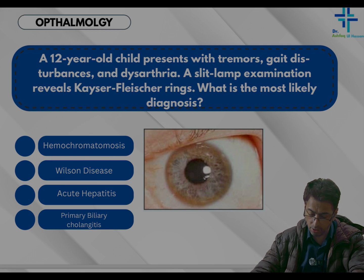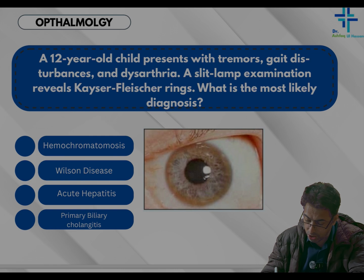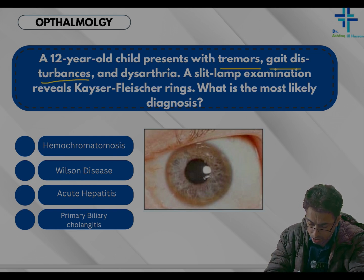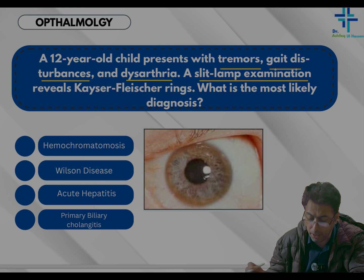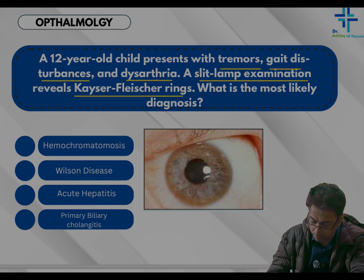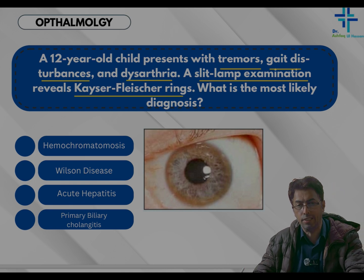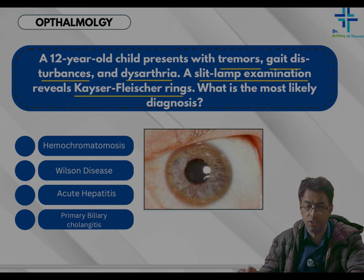Here is a clinical scenario from ophthalmology. A 12-year-old child presents with tremors, gait disturbances, and dysarthria. An ophthalmological examination in the form of a slit lamp is done and it shows Kayser-Fleischer rings. What is the most likely diagnosis? The options are hemochromatosis, Wilson's disease, acute hepatitis, and primary biliary cholangitis.